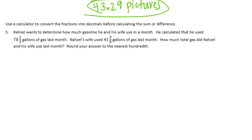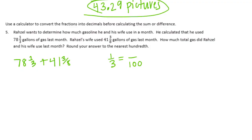Use a calculator to convert the fractions into decimals before calculating the sum or difference. Rozelle wants to determine how much gasoline he and his wife use in a month. He used 78 and 1 third gallons of gas last month, and his wife used 41 and 3 eighths gallons. How much total gas did they use? Round your answer to the nearest hundredth. We're going to add. It says we can use a calculator because 1 third isn't something we can easily make into hundredths — there's no whole number we can multiply to get 100.